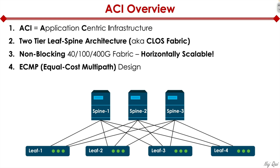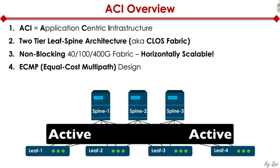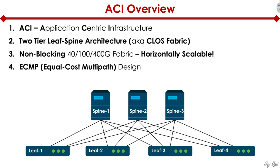It's also an ECMP — Equal Cost Multi-Path — design. What that means is: if there's a VM attached to leaf 1 that wants to talk to a VM on leaf 4, all three links that leaf 1 has and all three links leaf 4 has are 100% active-active. There is no active-passive anymore. It's all 100% active-active, and we can send traffic in a load-balanced way across all available links at any given point in time. It's very powerful.